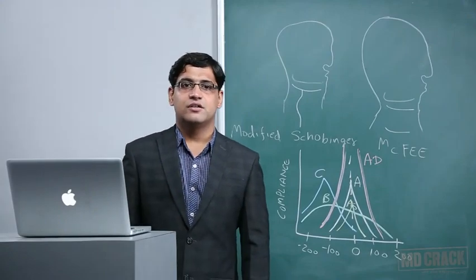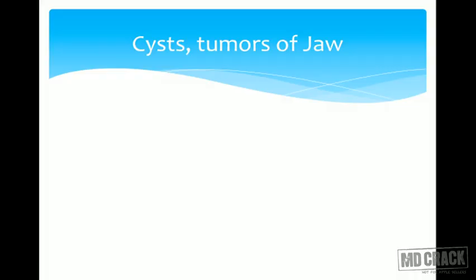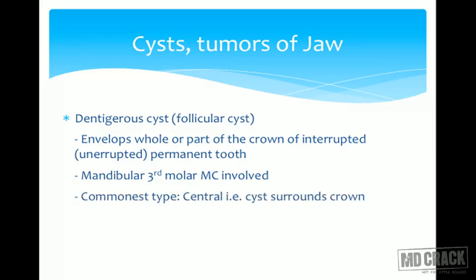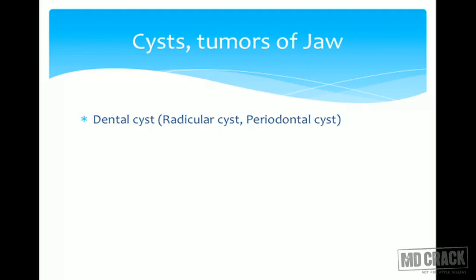Welcome everyone. In this session we'll talk about some miscellaneous points and also the audiology part. First, cysts and tumors of the jaw. The first is the dentigerous cyst, also known as follicular cyst. This envelops the whole or part of the crown of an unerupted permanent tooth. An important MCQ: dentigerous cyst occurs in unerupted teeth. The lower third molar (mandibular third molar) is most commonly involved, and the commonest type is the central type where the cyst surrounds the crown. The fluid inside is cholesterol-rich. Treatment is enucleation with removal of the associated tooth.